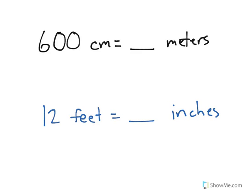We're going to look at two basic measurement conversions here. The first one is converting centimeters, to be exact 600 centimeters, and we're trying to find out how many meters 600 centimeters is equal to.